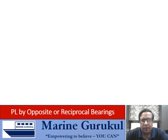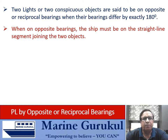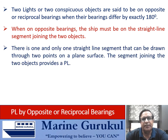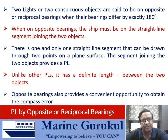PL by opposite or reciprocal bearings: two objects are on opposite bearings when their bearings differ exactly by 180°. When on opposite bearings, the ship must be on the straight line segment joining the two objects. Unlike other PLs, this PL has a definite length — only between the two conspicuous points — it cannot be extended indefinitely. Opposite bearings also provide a convenient opportunity to obtain compass error.